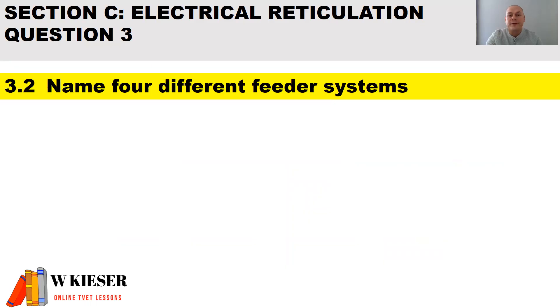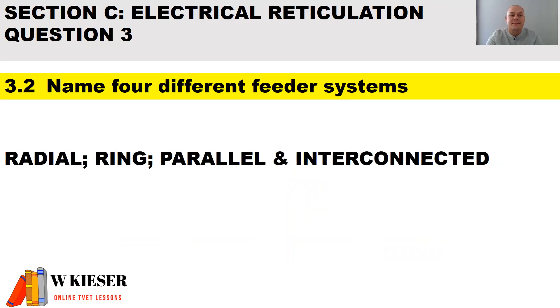Name four different feeder systems. We get radial, ring, parallel, and interconnected. Interconnected is also known as the mesh.